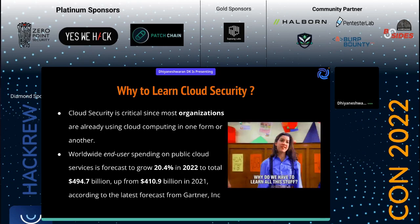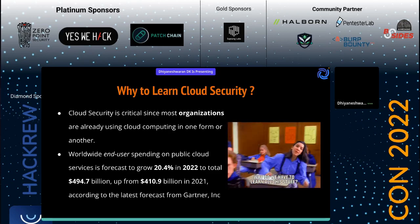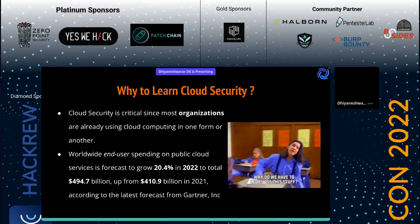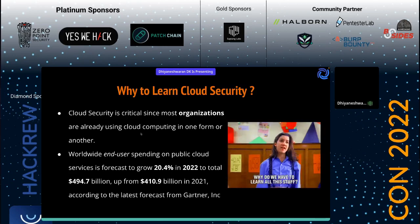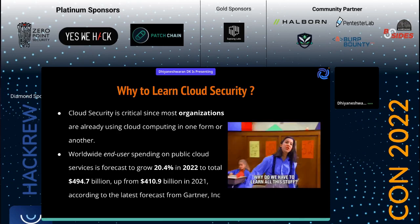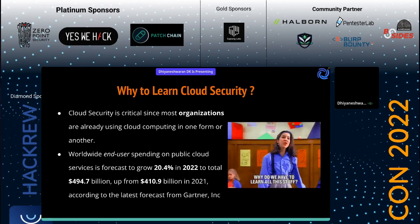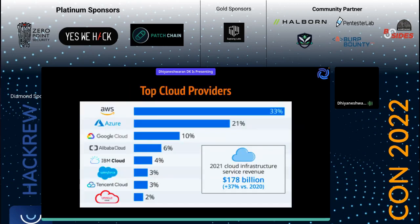The top cloud providers include Azure, AWS, Google Cloud, Alibaba Cloud, and IBM Cloud. There are around 16 cloud providers I've tested so far, including Dropbox. In terms of market dominance, AWS holds around 50–70% of the market share. Today's demo covers six topics, and I'll try to cover them in half an hour, or at least showcase screenshots and introductions for each.